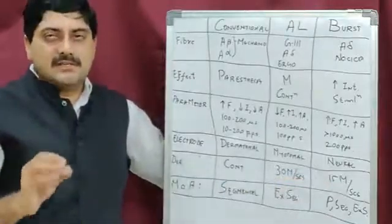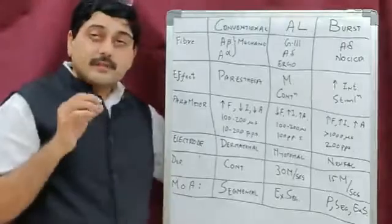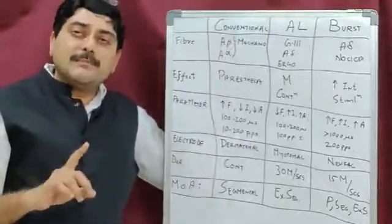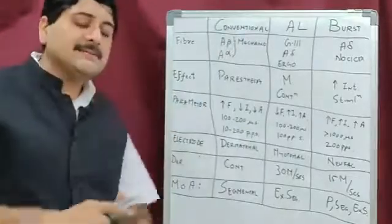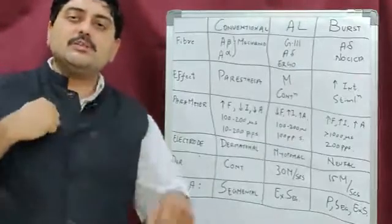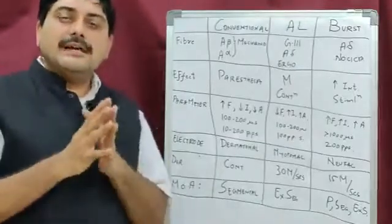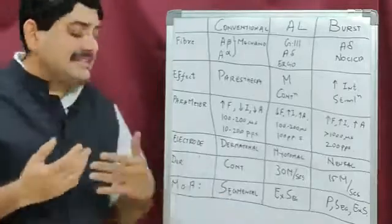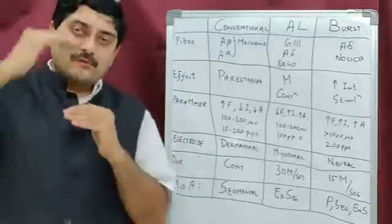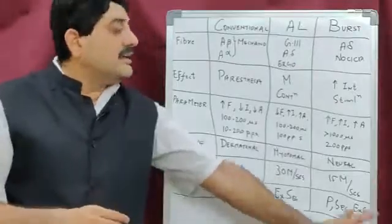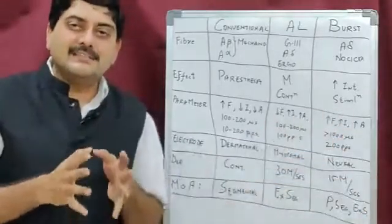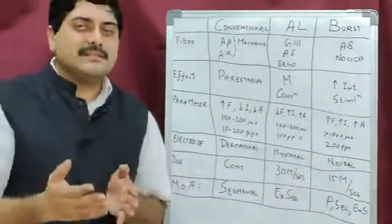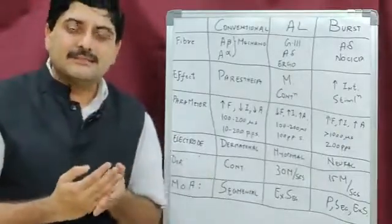For Burst TENS, the session duration is 15 minutes. Multiple sessions can be given depending on the patient's pain, but at any given point it should not exceed 15 minutes per session. The mechanism of action for conventional TENS is segmental — from the stimulation point to the spinal cord and back. Burst TENS, because it causes high intensity stimulation, uses peripheral, segmental, as well as extra-segmental mechanisms.